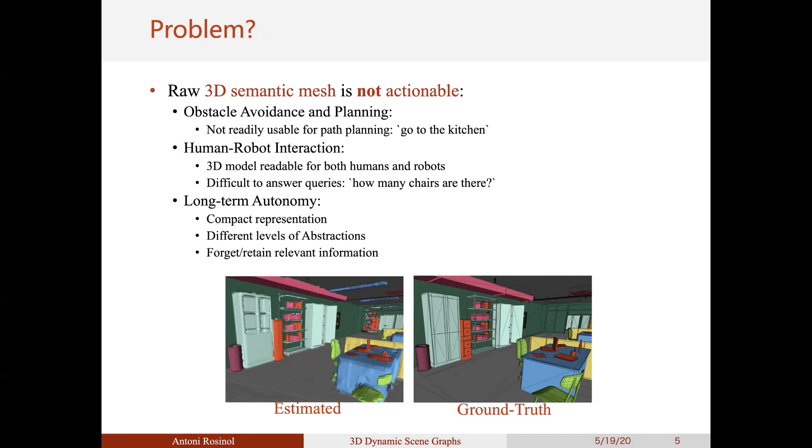Moreover, we want a map that is easily interpretable both for humans and for robots. The 3D semantic mesh is already interpretable by both humans and robots, but as humans, we prefer to reason in terms of higher level abstractions, such as buildings, rooms, objects, and so on.